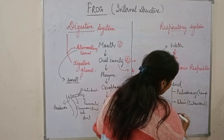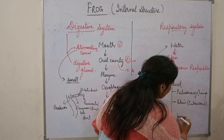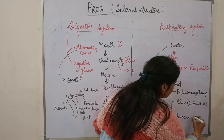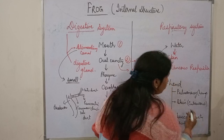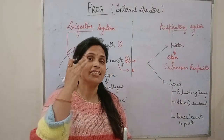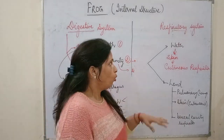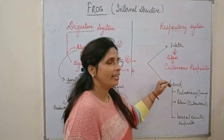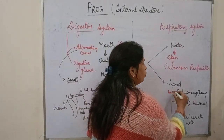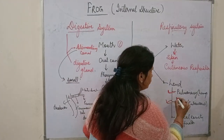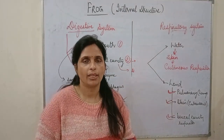The third mode is through the buccal cavity — buccal cavity respiration. So in case of water, the main respiration is cutaneous. While on land, the most common is pulmonary — through lungs — followed by cutaneous through the skin, and the least is buccal cavity respiration. So thank you so much.